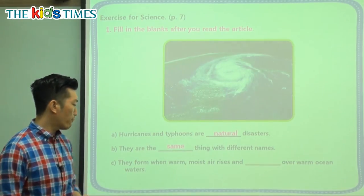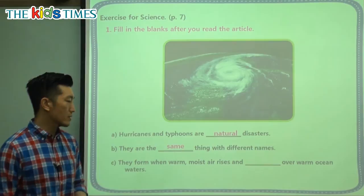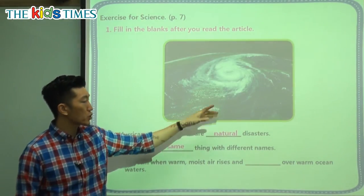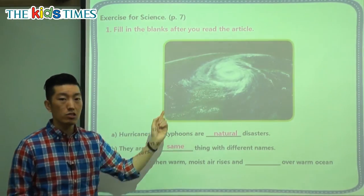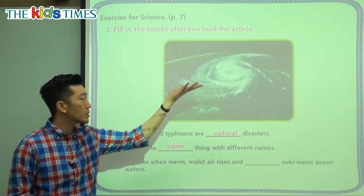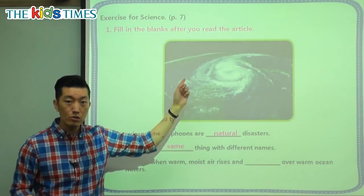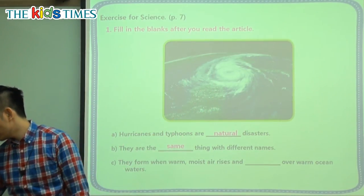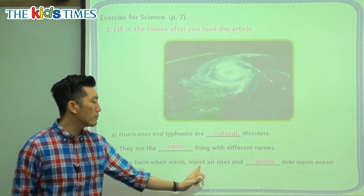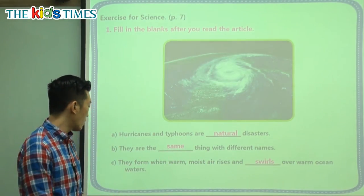Last part: they form when warm, moist air rises and something over warm ocean water. If you look at the picture, they start taking place when warm, moist air rises and — look at the picture — it's kind of spinning. What do we call that? Swirling, or swirls. They form when warm, moist air rises and swirls over warm ocean waters.